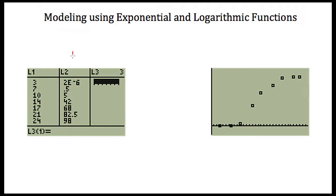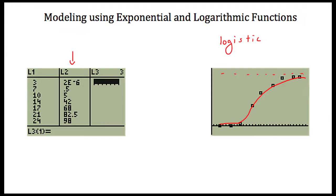Our first step is to enter our data into our modeling software, then create our scatter plot just like we did before. Here's my scatter plot, and this one appears to look like an S-curve. I would say this is most likely a logistic model, because it appears to approach a minimum value, then go up and level out at a maximum value. However, it may also be a logarithmic model — and we can try both.